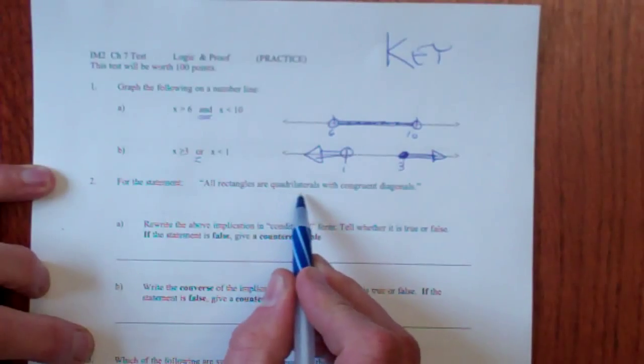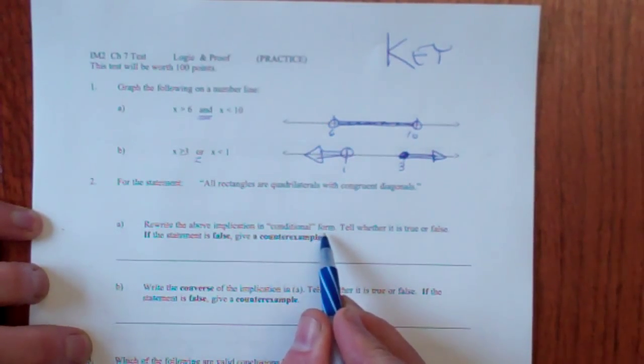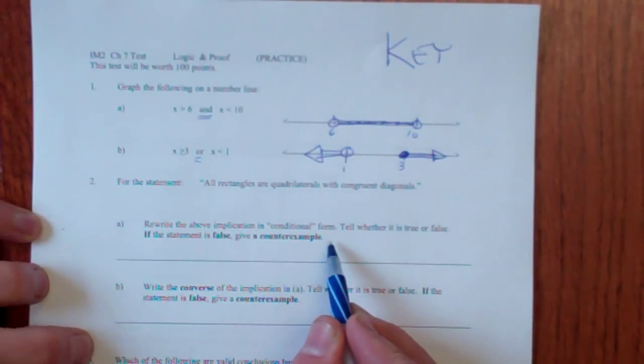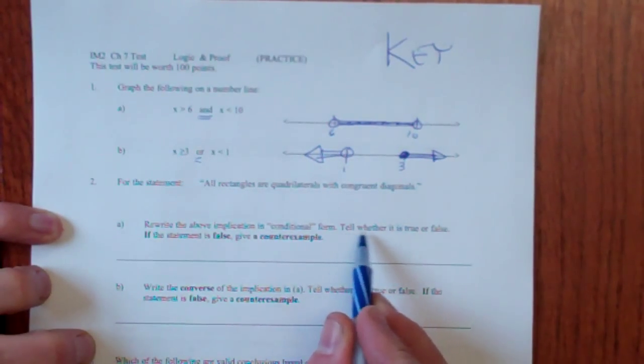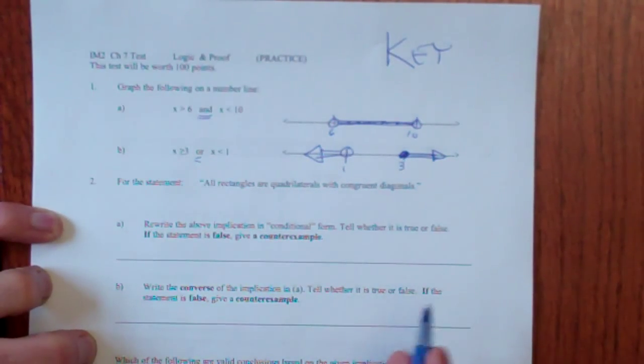Alright, for the statement, all rectangles are quadrilaterals with congruent diagonals. Rewrite it in conditional form, that is, in if-then form. And say whether it's true or false. If the statement is false, give a counterexample.